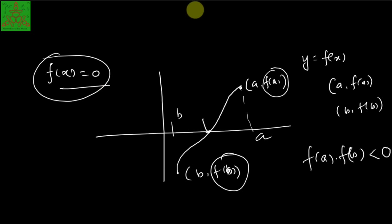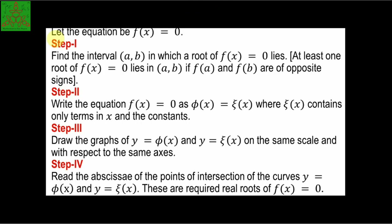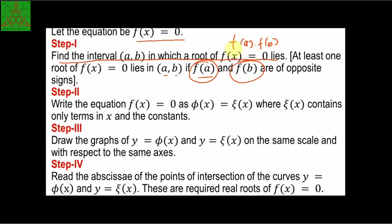Let us see the steps to obtain the roots of such an equation. Given the equation f(x) = 0, find an interval [a, b] in which a root lies. That means you must find two points a and b such that f(a) and f(b) are of opposite sign — that is, f(a) × f(b) is negative. In between this interval [a, b], one real root will lie.